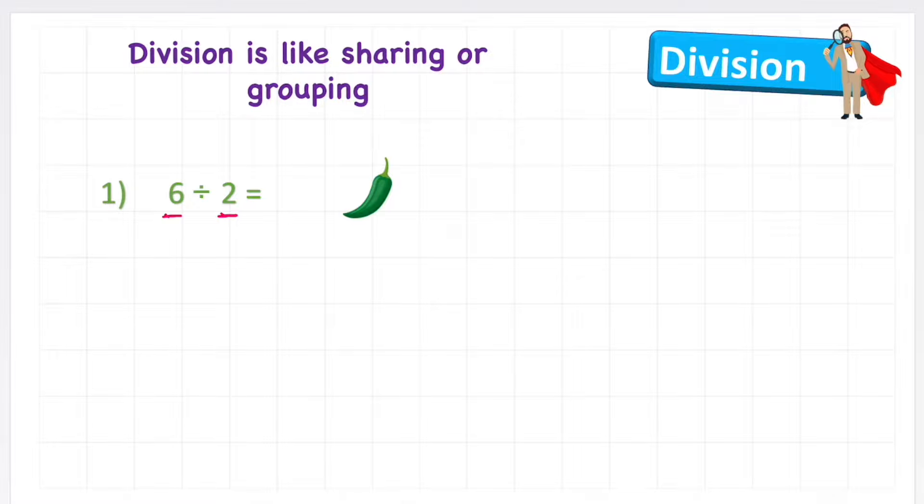This little funny symbol basically means to share, so we're going to be sharing our 6 between 2. So imagine that we have two friends. I'm going to draw them. Here we go. This is Johnny and Mike. Okay, so I've got my two friends that I'm sharing between, but now I'm going to share my 6. So I have two choices. I can either share or I can group, and in this example I'm going to share.